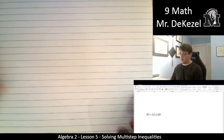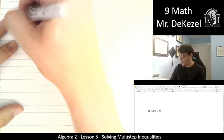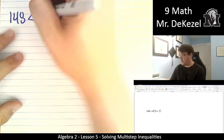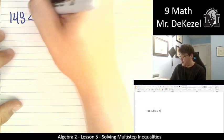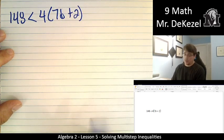So it's very similar to what we were doing before, just making sure we take care of our inequality. 148 is less than 4 times 7b plus 2.